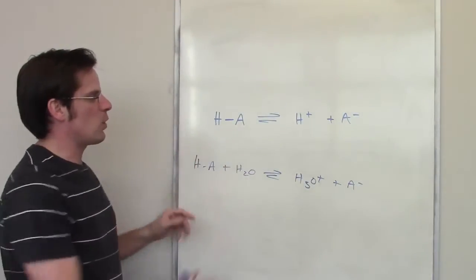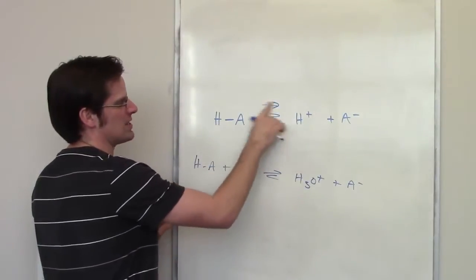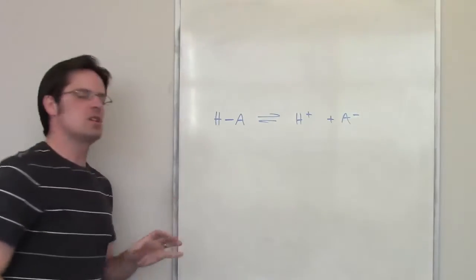If this is a strong acid, of course, it's completely one-way, so I have a one-way arrow there, whereas if it's a weak acid, I've got an equilibrium dance going on.